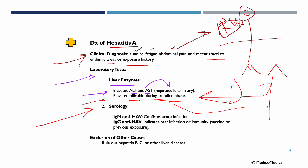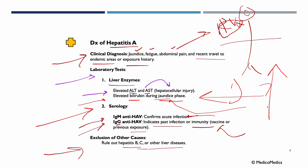For blood tests, we look for immunoglobulin M (IgM) anti-Hepatitis A virus, which confirms an acute infection. Immunoglobulin G (IgG) anti-Hepatitis A virus indicates past infection or immunity — either from vaccine or previous exposure. We also perform exclusion of other causes, such as Hepatitis B, Hepatitis C, or other liver diseases.